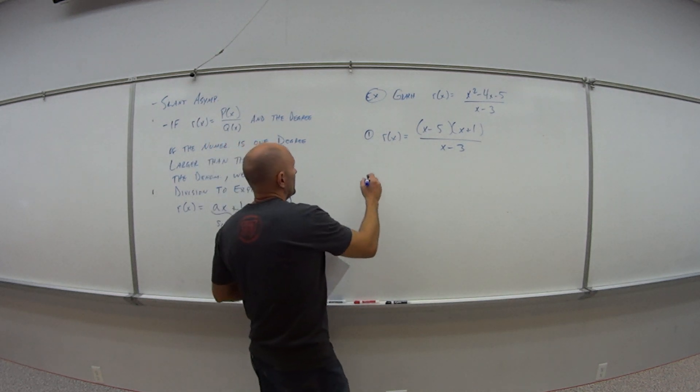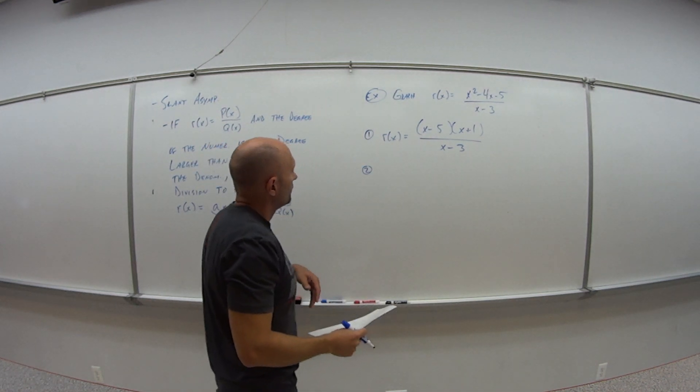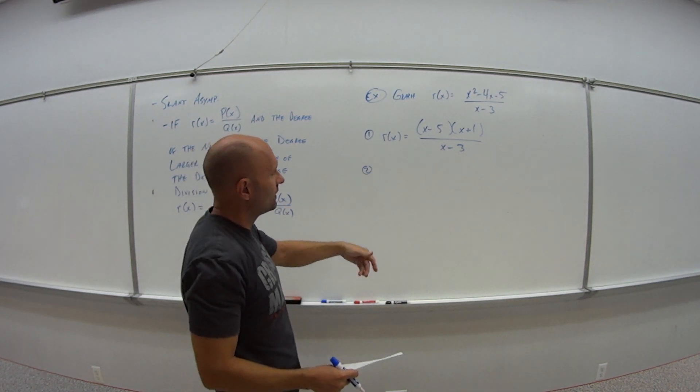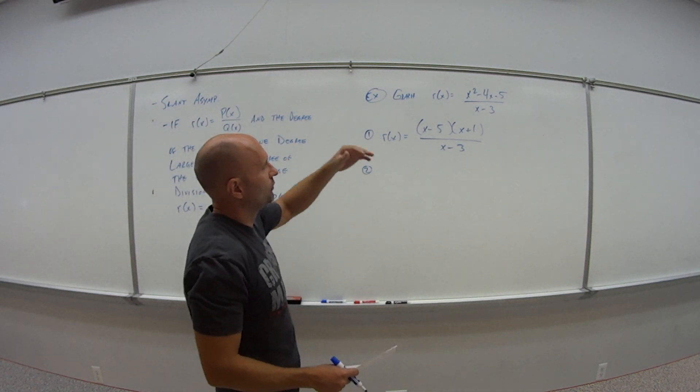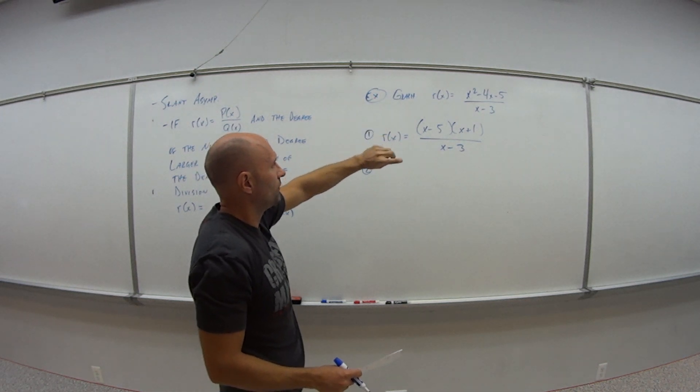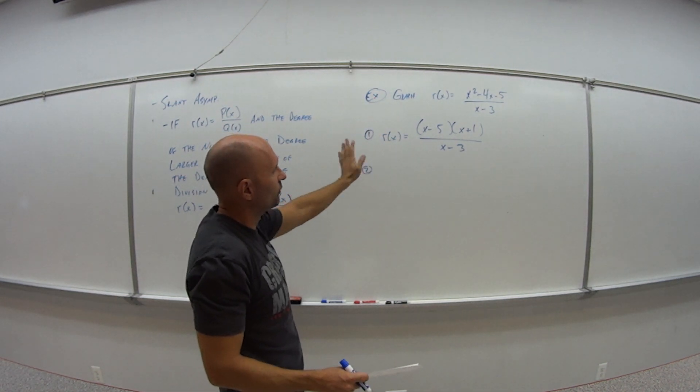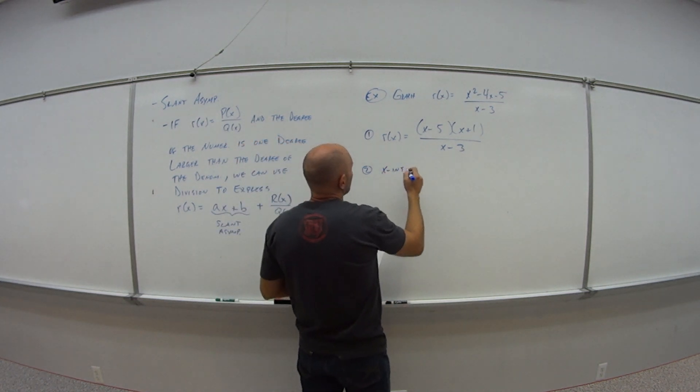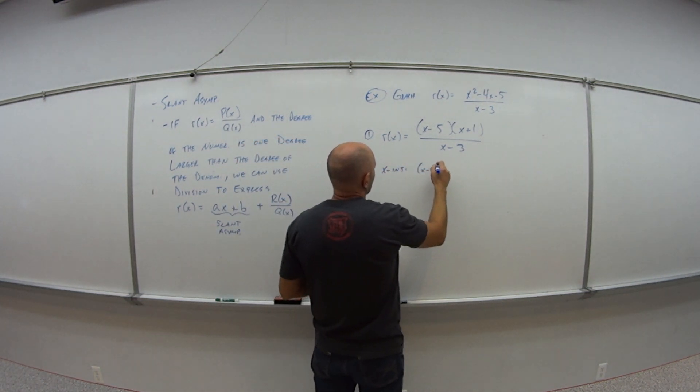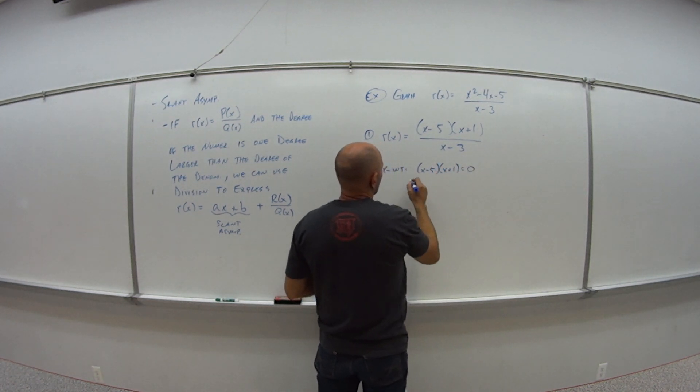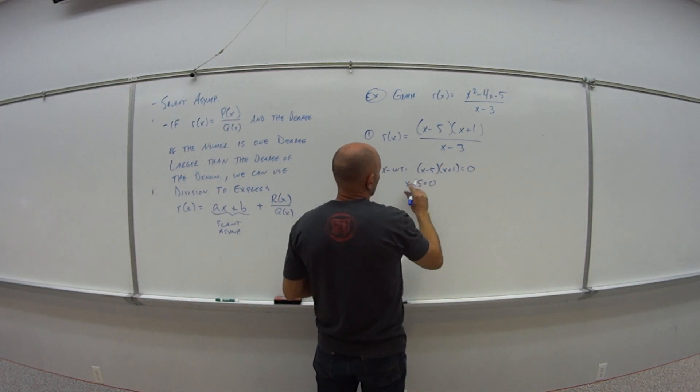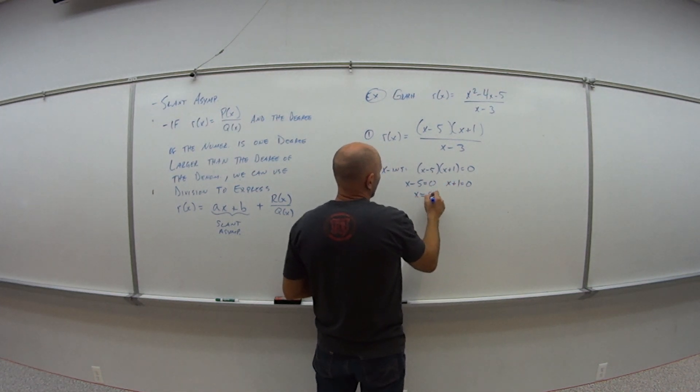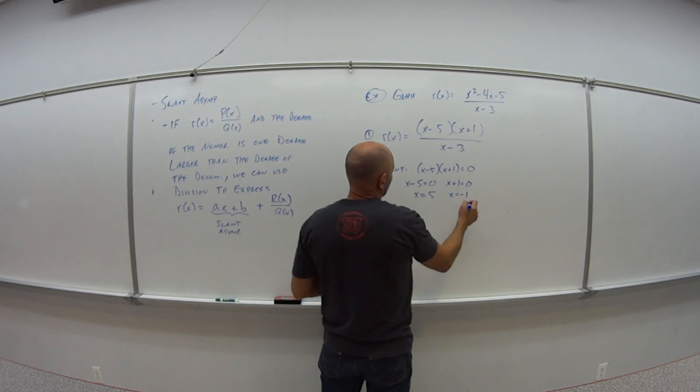Step two is my x and y intercepts. So for the x intercepts, we do what? We set y equals 0. Remember I said that basically all we're doing is set the numerator equal to 0 because the denominator is going to multiply by 0, so it's gone anyways. So for my x intercepts, I say x minus 5 times x plus 1 is 0. So by 0 property rule, x minus 5 is 0, x plus 1 is 0, so x is 5, x is negative 1.